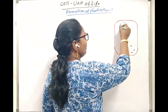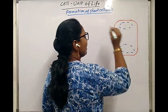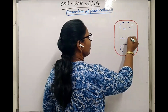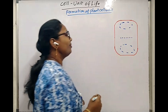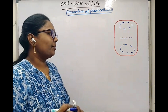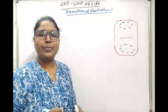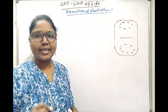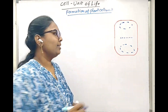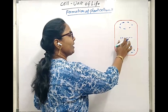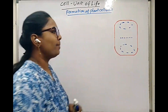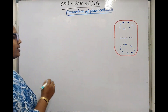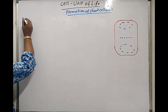If this is one daughter cell and this is another daughter cell, small pieces of Golgi complex and endoplasmic reticulum together termed as phragmoplasts get accumulated at the central part of the total cell structure.